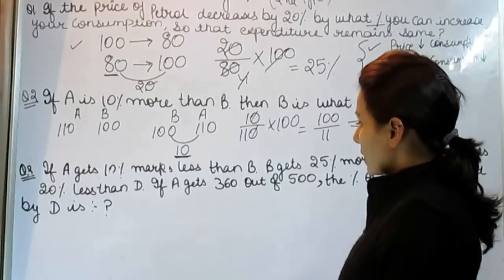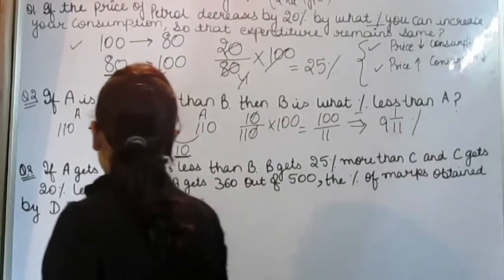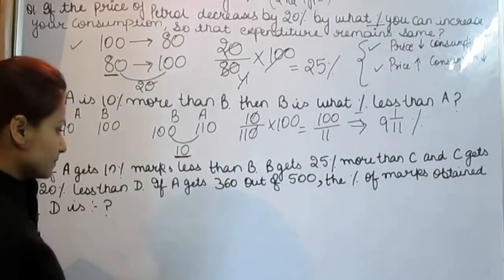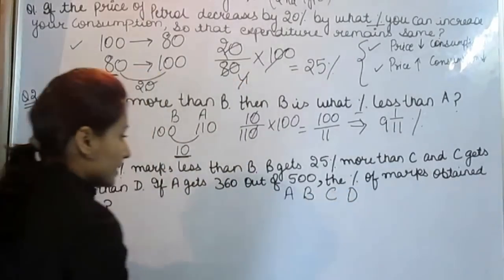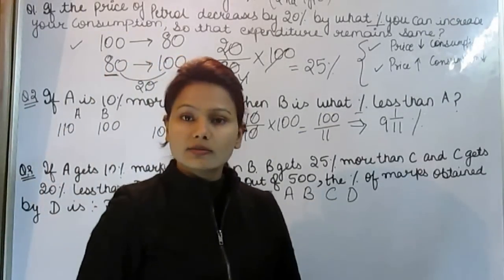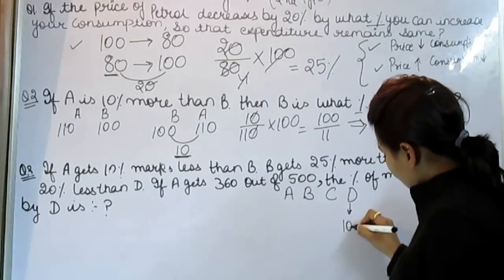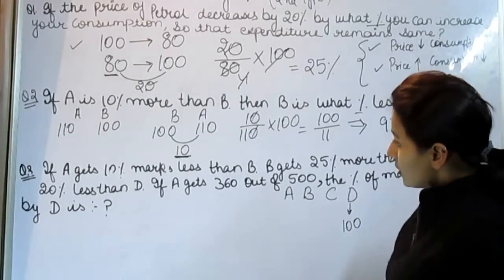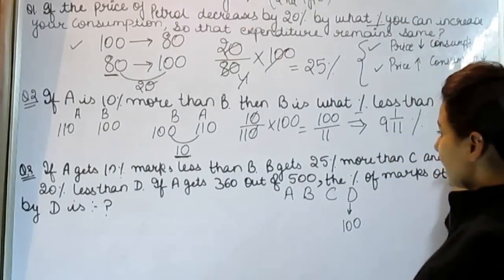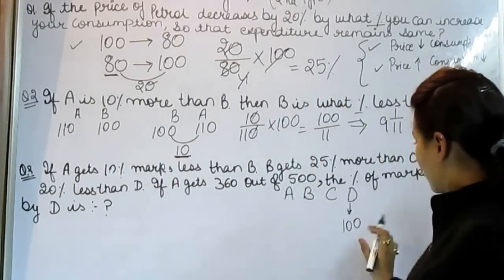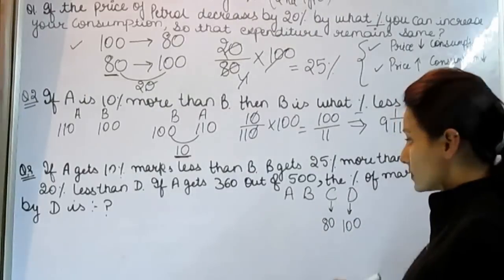Now the third question: if A gets 10 percent marks less than B, and B gets 25 percent more than C, and C gets 20 percent less than D. First of all, write all the characters. In this type of question, always start from the end — always put the last character as 100. So starting from the end: C gets 20 percent less than D. If D is 100, C would be 80, because it is 20 percent less than D.